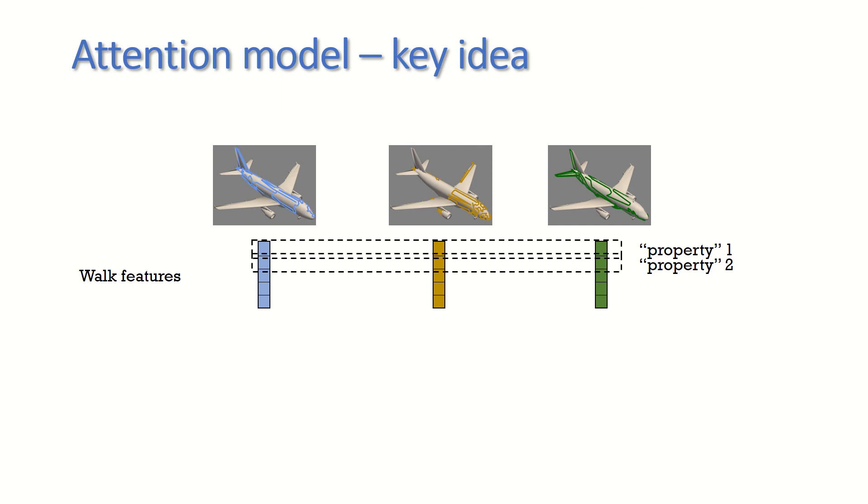We may think of every vector's entry as describing a certain property of the walk. Thus, in order to compute entry i in the resulting mesh feature vector, we learn how to weigh all the i-th entries of the walk feature vectors.